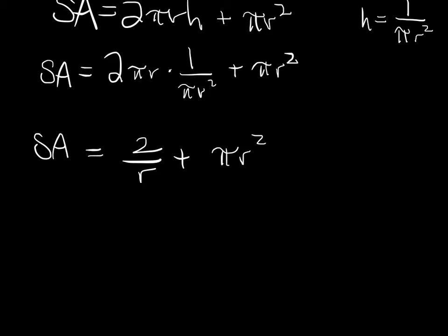We've got to take the derivative. This is 2r⁻¹ plus πr². The derivative is negative 2r⁻² plus 2πr.